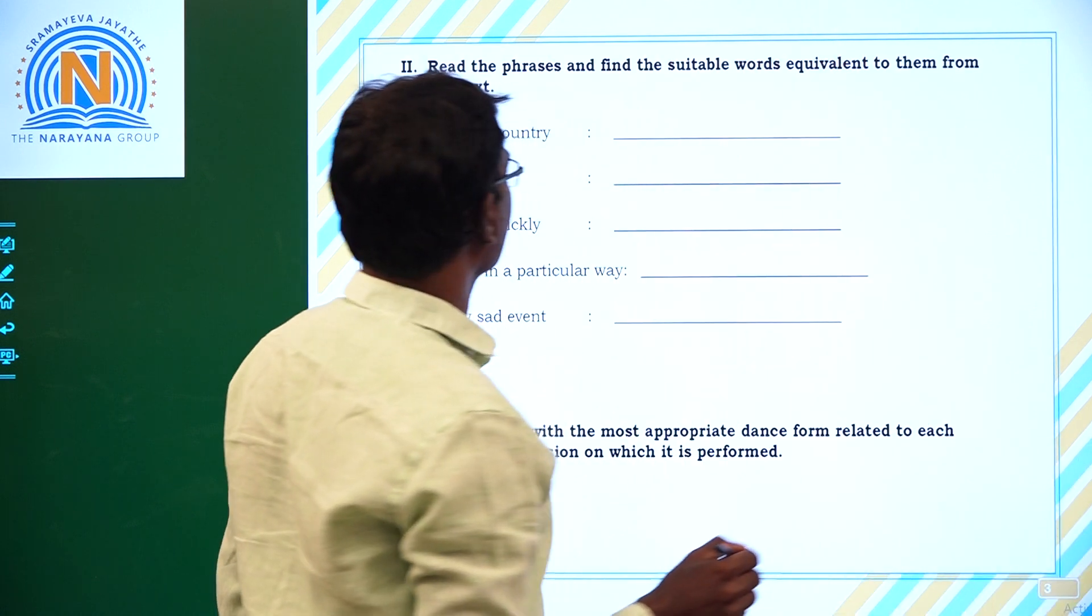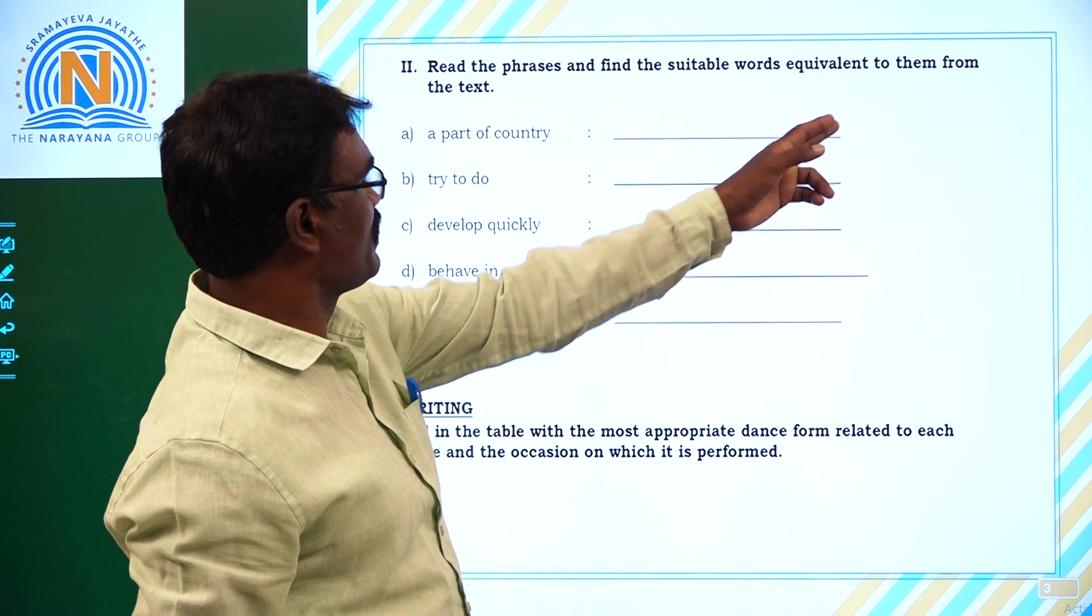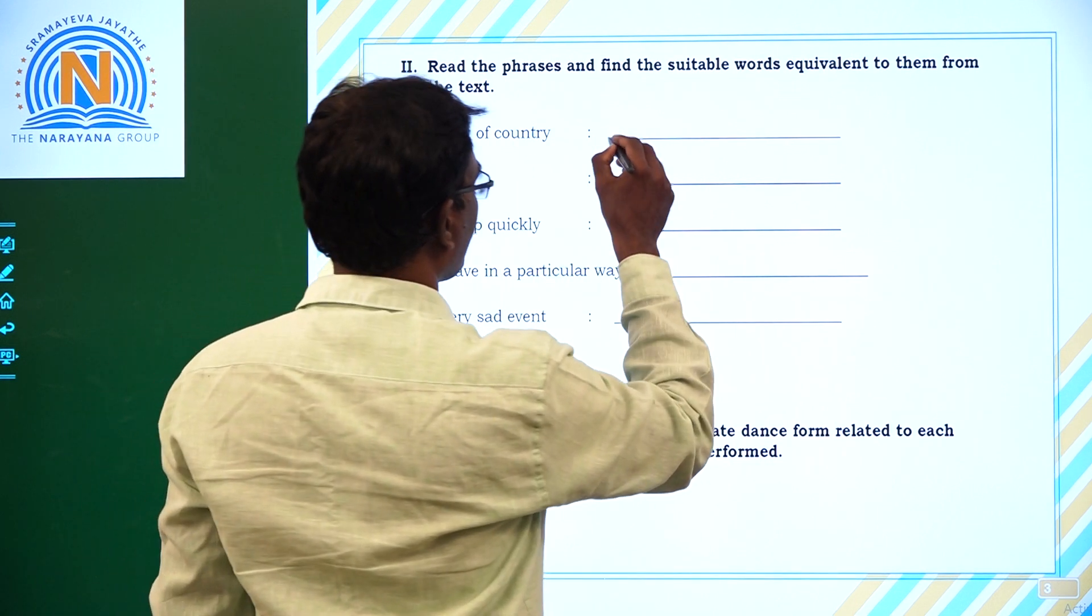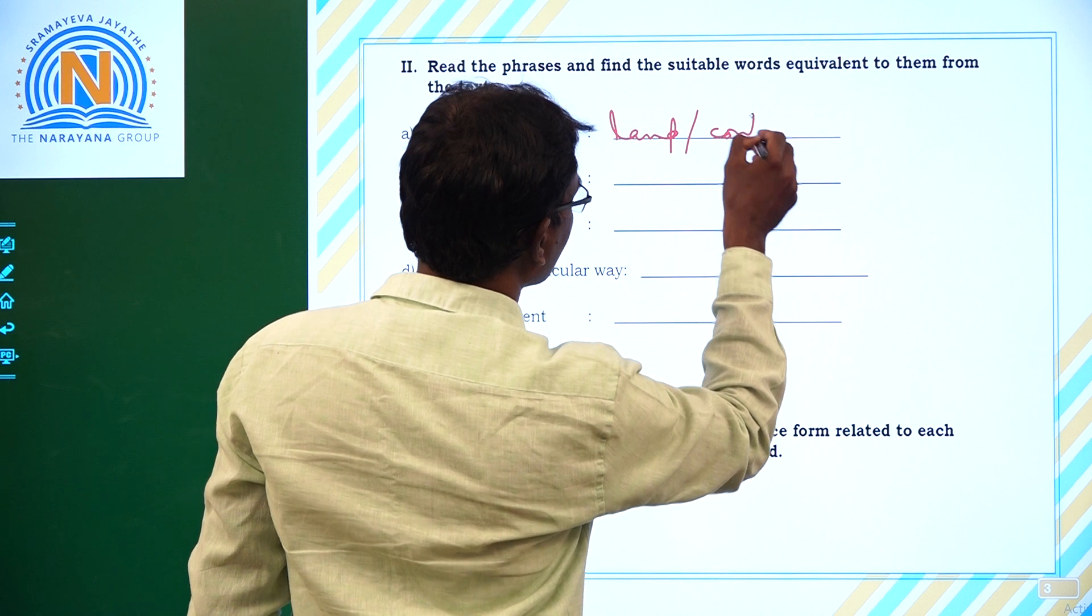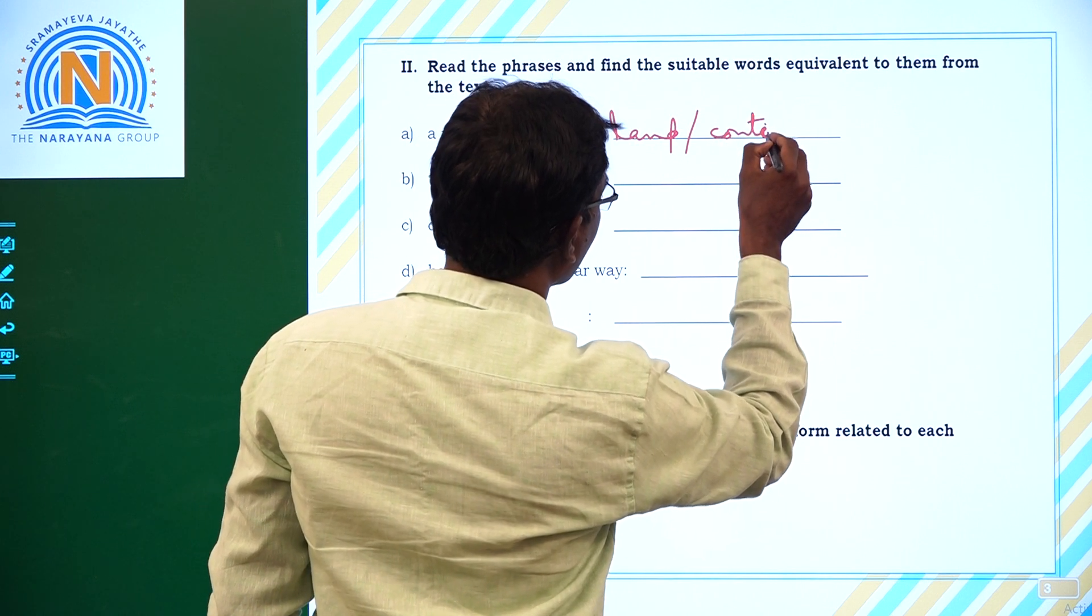Next, read the phrases and find the suitable words equivalent to them from the context. A part of country, so that is called land or continental.